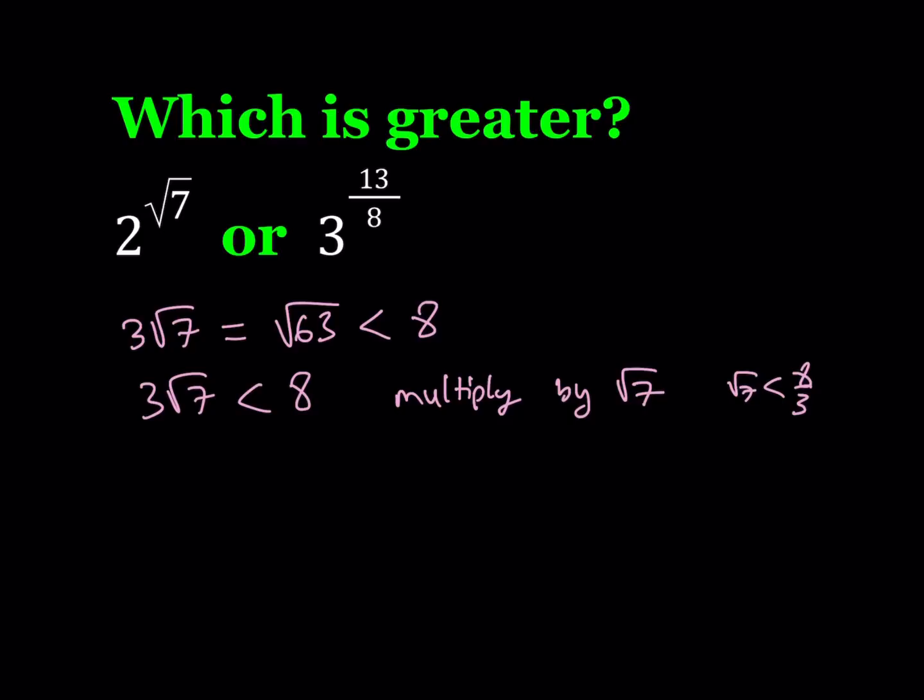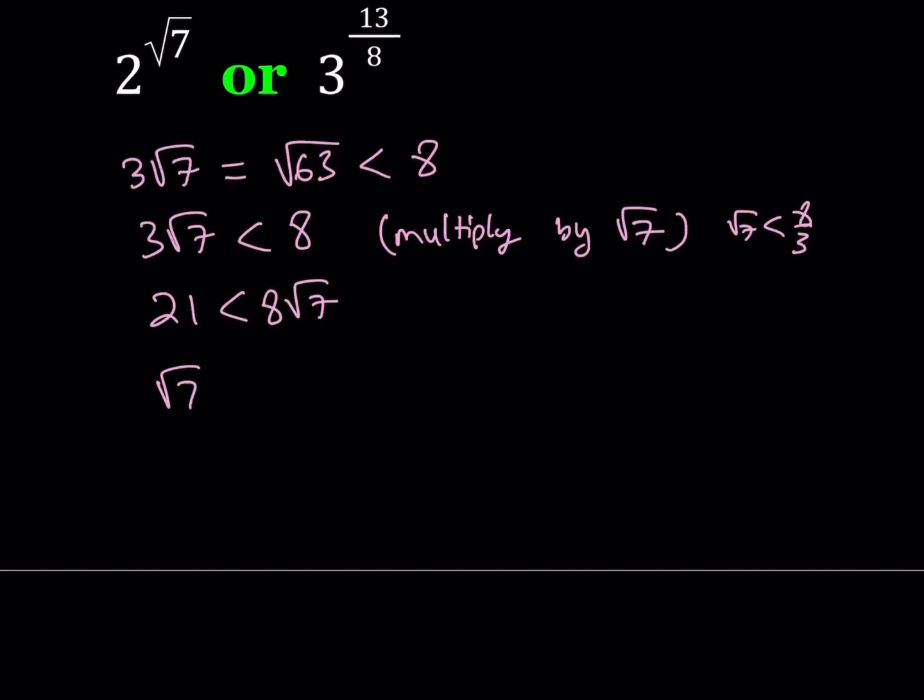Okay, so I'm going to multiply both sides by root 7 and that's going to give us 21 is less than 8 root 7. And that's basically going to put the root 7 on the right hand side. And from here you can safely say that root 7 is greater than 21 eighths. Great.